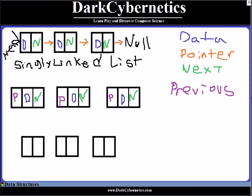So let's draw the pointers in. We have one going out and we have the next going to the next node, and we have to point back at the previous node — previous to next. Each element needs one that goes forward to the next node. And then it goes to null, which is just zero. The first part is called head.